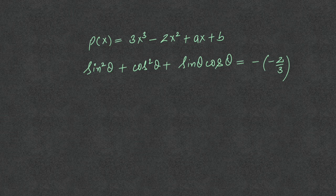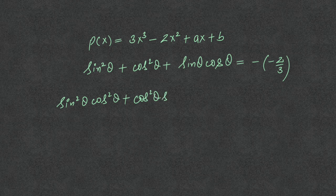The sum taken two at a time: sin²θ·cos²θ + cos²θ·sinθcosθ + sinθcosθ·sin²θ is equal to a/3.